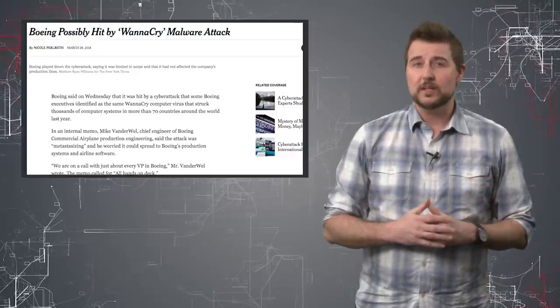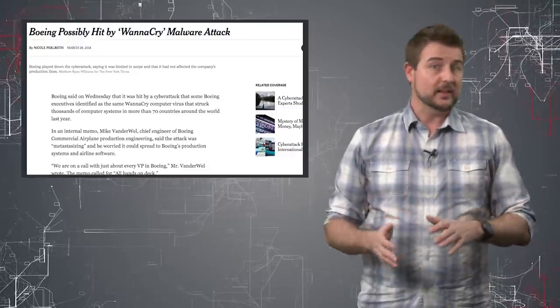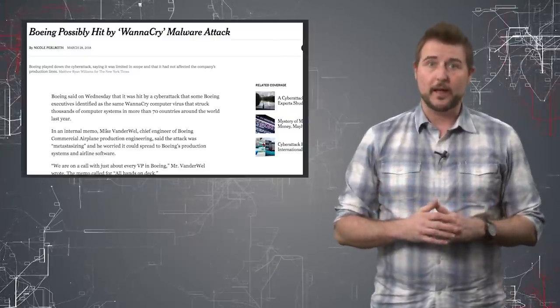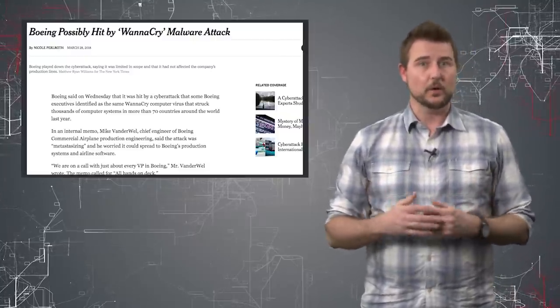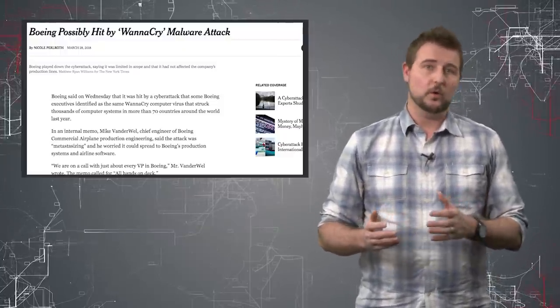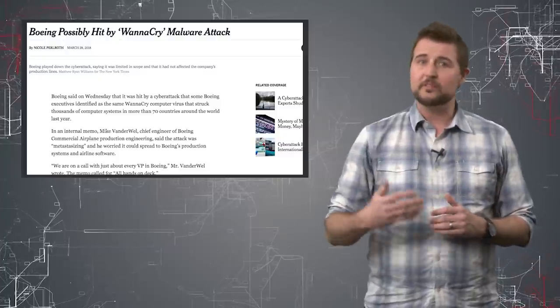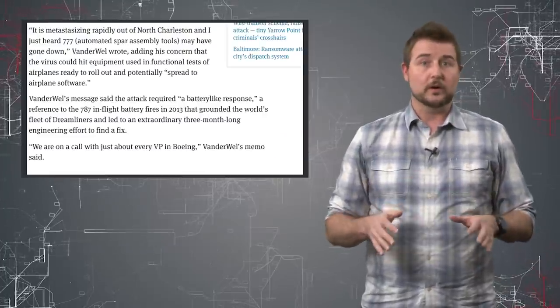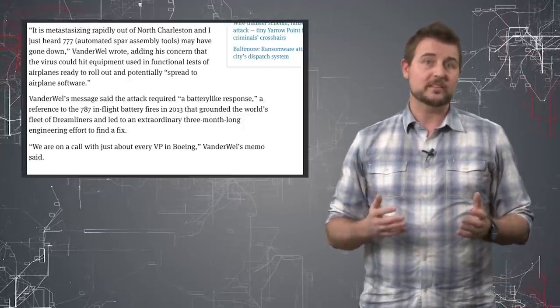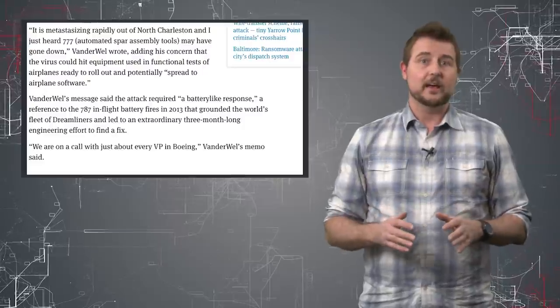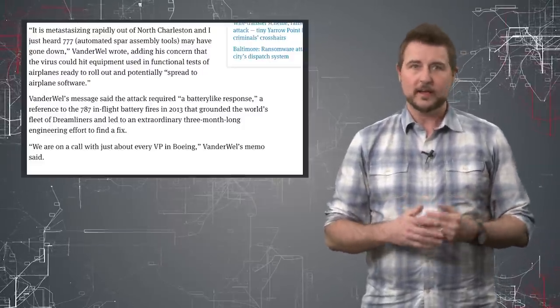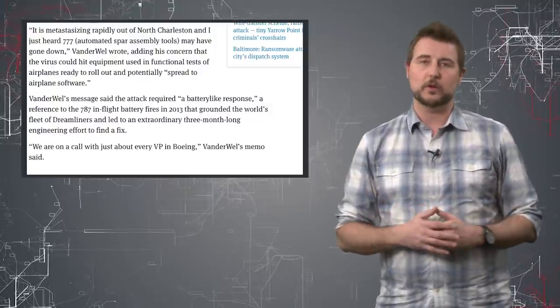Last week word leaked out that Boeing, at least one of their North Charleston locations, was infected by WannaCry, this old, almost a year-old ransom worm. This generated a few headlines largely because the whole leak was due to some internal memo where someone was talking about this infection in pretty severe language, saying that the infection had metastasized beyond just North Carolina and seemed to be downing some other locations as well.